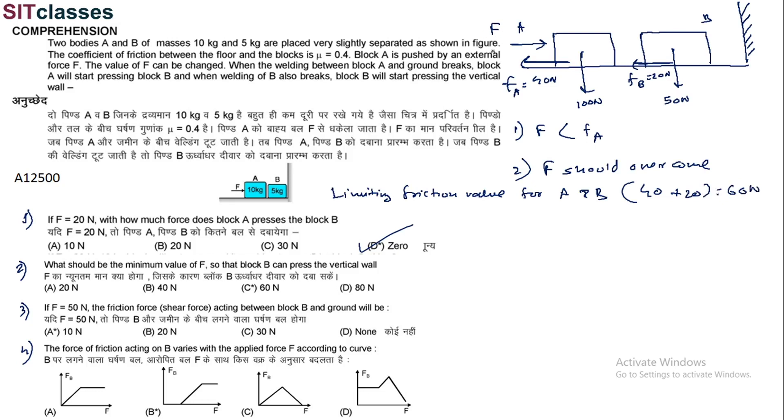So F, external force minimum force should be equal to 60 N, so that block B presses against the vertical wall. So 60 N.